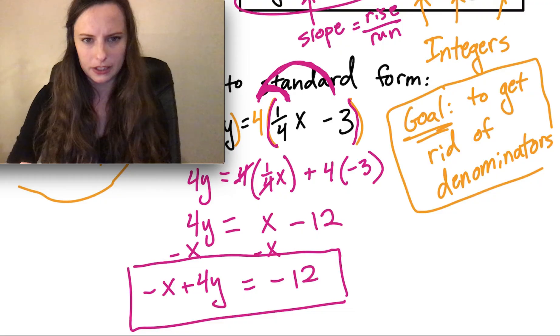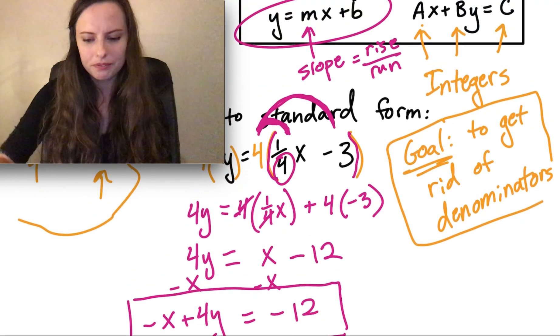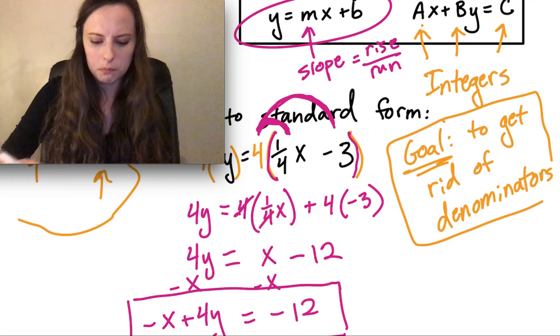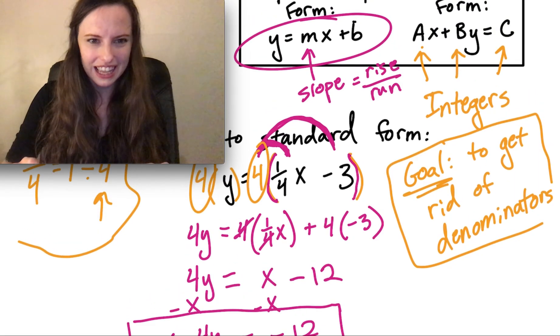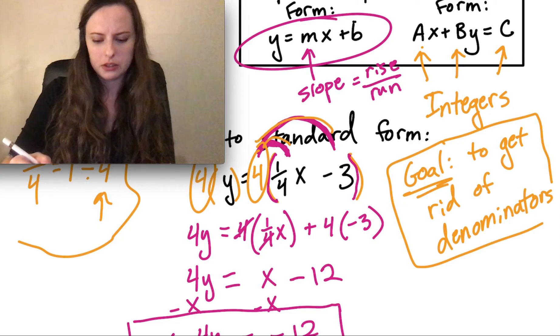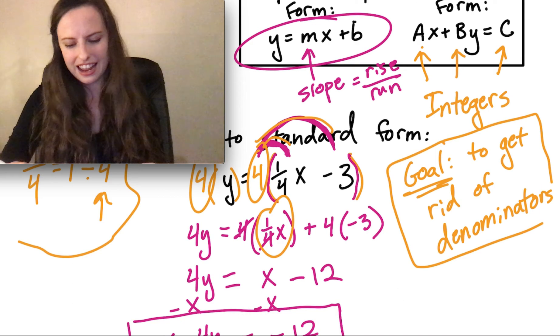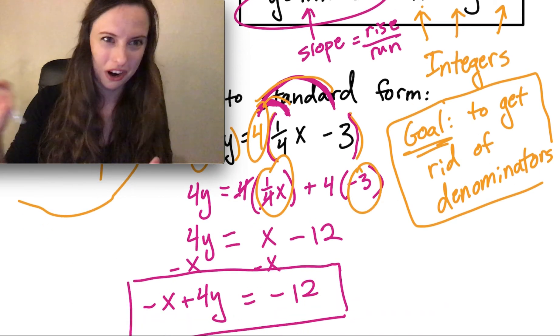So just to recap here, we needed to get rid of this denominator of 4. And we did that by multiplying both sides by 4. And then we had to remember to distribute that 4 to both the 1 fourth x and to the negative 3. And then once we did that, our fractions were gone.